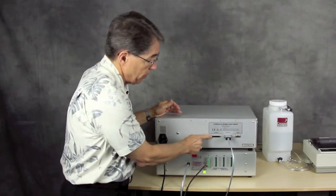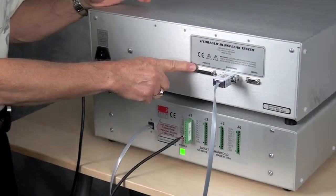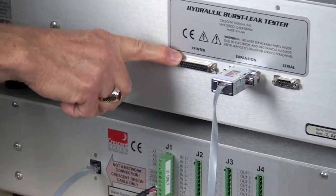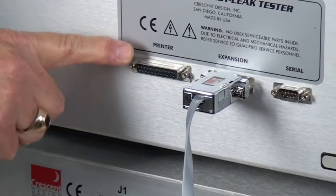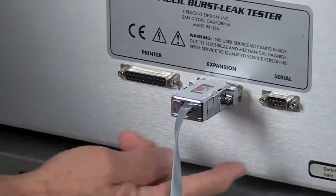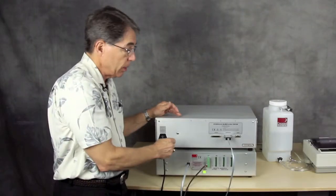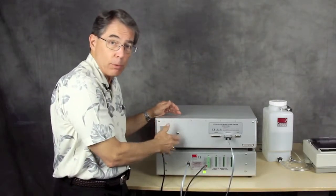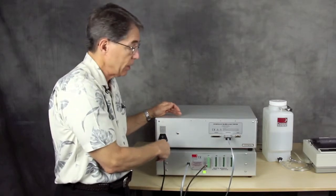And just for further information, you'll notice right here that on the HBLT, this is the printer connector. Later on, when we're running the test, you'll see the printer running. And that's because we have it hooked to this printer port here. And then the HBLT serial port allows it to be connected to a PC for other features to be used.